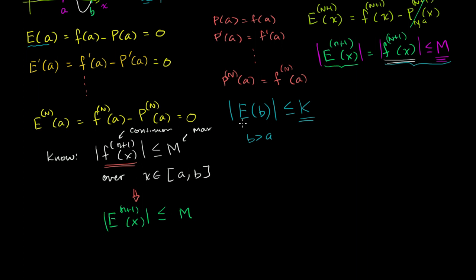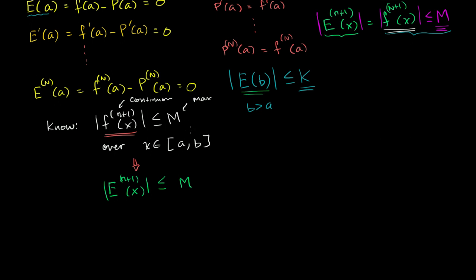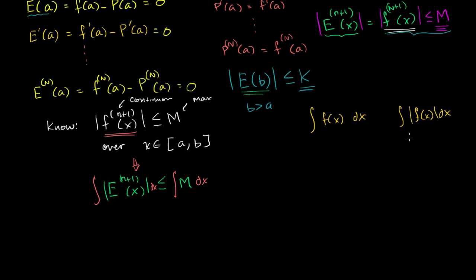Let's take the integral of both sides. The integral on the left-hand side is a little interesting — we're taking the integral of the absolute value. It would be easier if we were taking the absolute value of the integral. So let me write a little aside here. We know generally that if we have two options: the integral of the absolute value versus the absolute value of the integral — which of these can be larger?